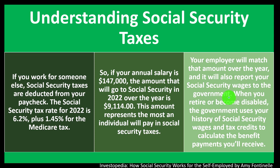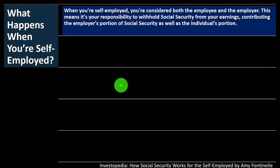When you retire or become disabled, the government uses your history of Social Security wages and tax credits to calculate the benefit payment you'll receive. Your payment will be dependent in part on how much you paid into the system — the more you paid in, the more you'll get in benefits, although higher dollar amounts yield proportionally less benefit. When you're self-employed, you're considered both the employee and the employer, and the IRS is going to hit you on both sides — employee and employer portion — for payroll taxes. This means it's your responsibility to withhold Social Security from your earnings, contributing both the employer's portion and the individual's portion.